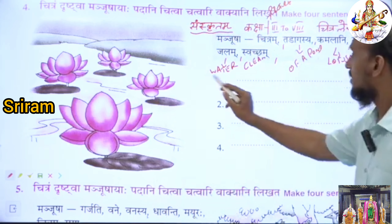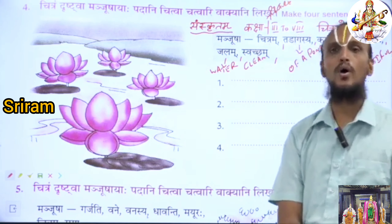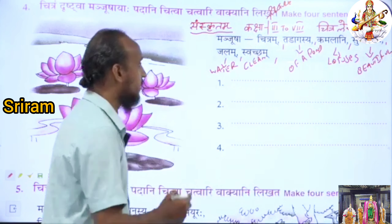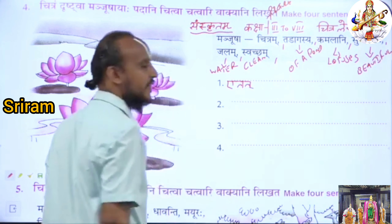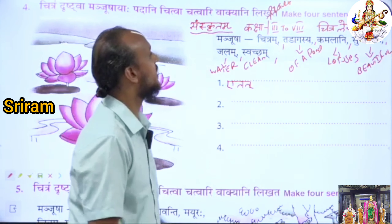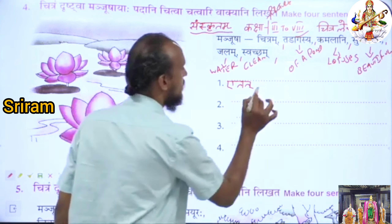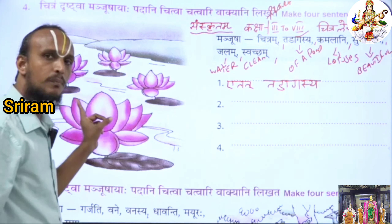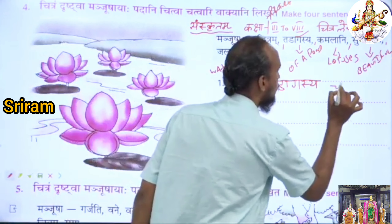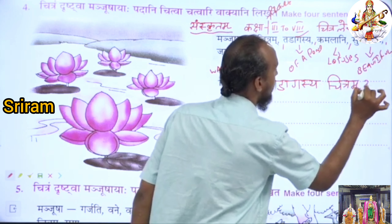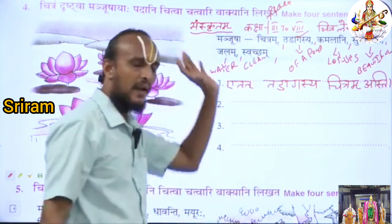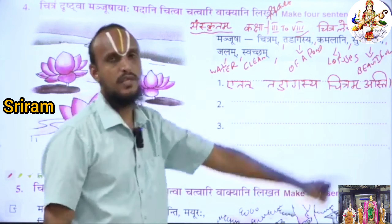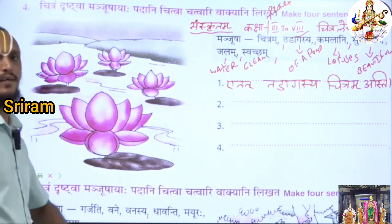For an example: 'This is a picture of a pond.' How will you make this sentence into Sanskrit? First, you have to write 'Ye tathu Thadagasya Chitram.' This is a picture, so we use Chitram. Then end with the verb Asthi — this is mandatory. The full sentence is: 'Ye tathu Thadagasya Chitram Asthi,' meaning 'This is a picture of a pond.'